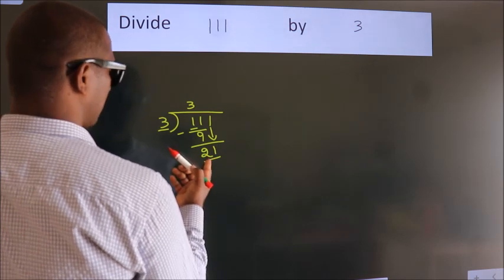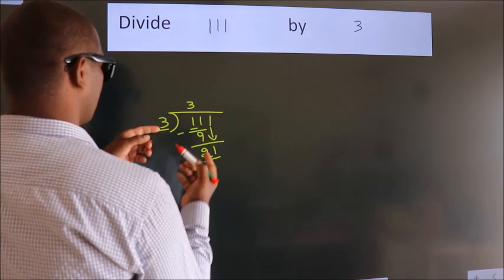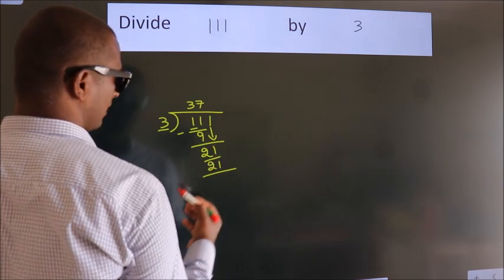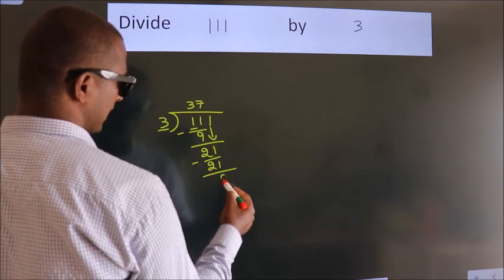When do we get 21 in the 3 table? 3 sevens is 21. Now we subtract and get 0.